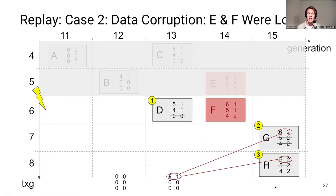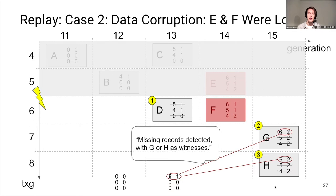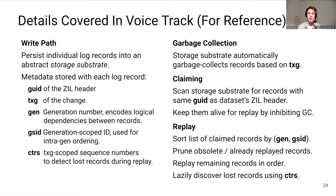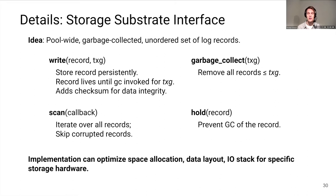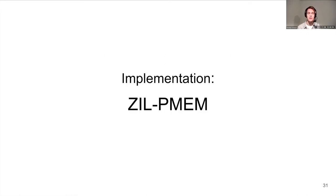The end result is that we've replayed as much as possible given the constraint of the generation numbers. Importantly, we can actually present witnesses for missing records — G and H surface witnesses that record F is missing. If this was too fast, I'd encourage you to read the relevant chapter in the thesis, or review these summary slides.